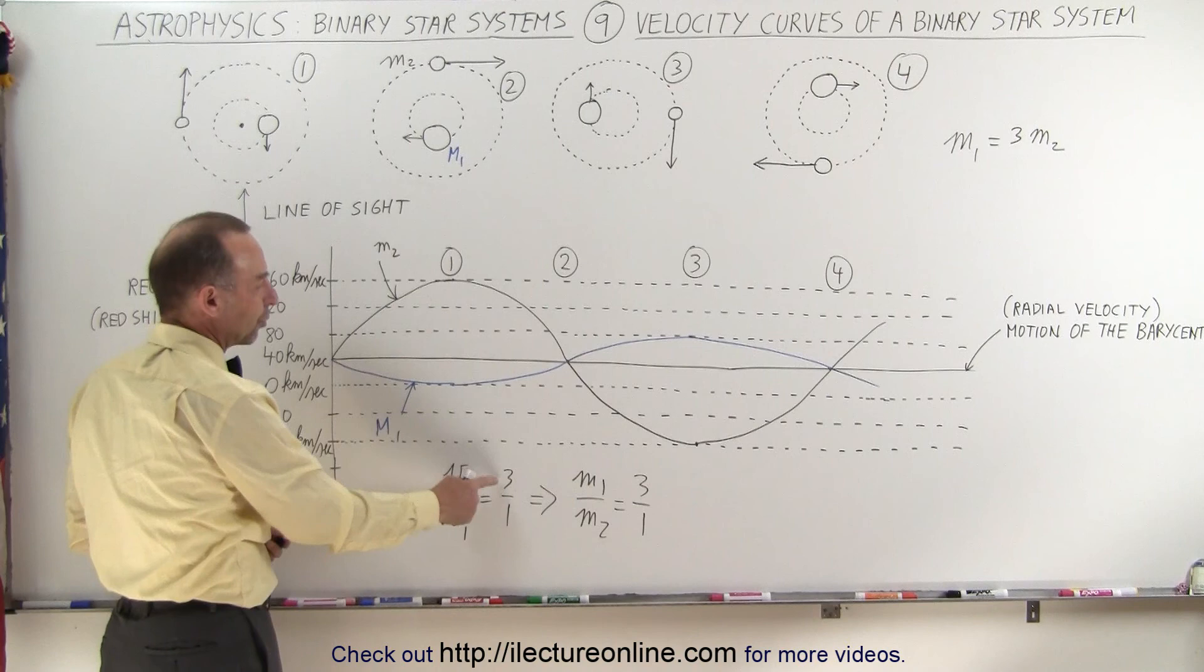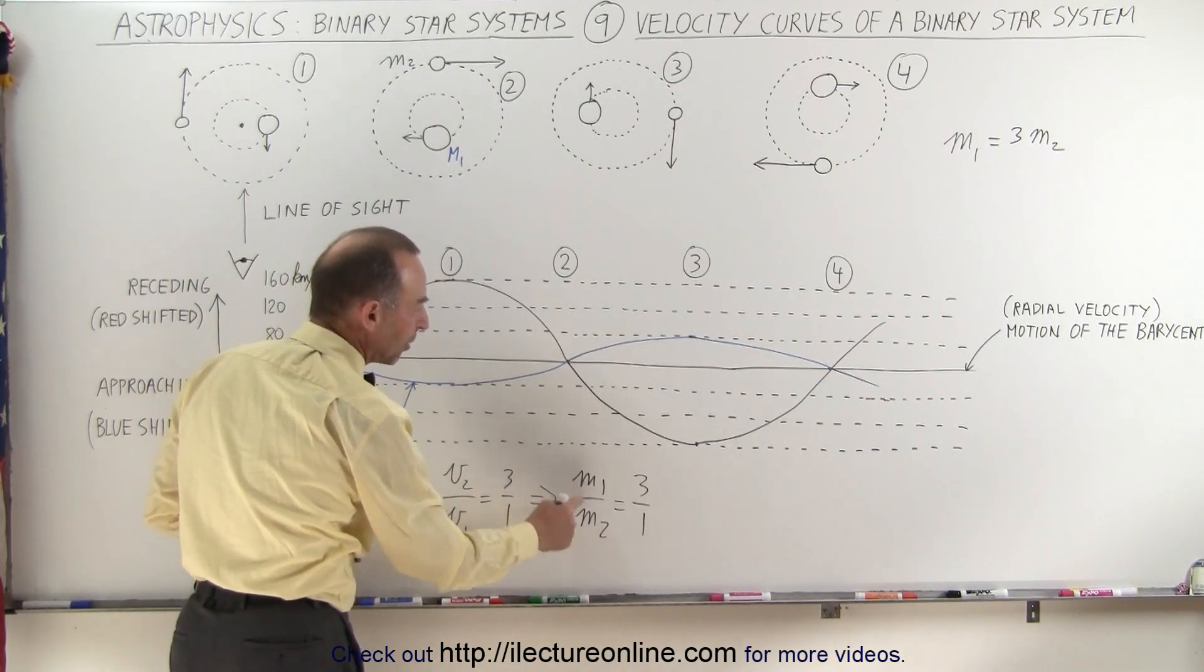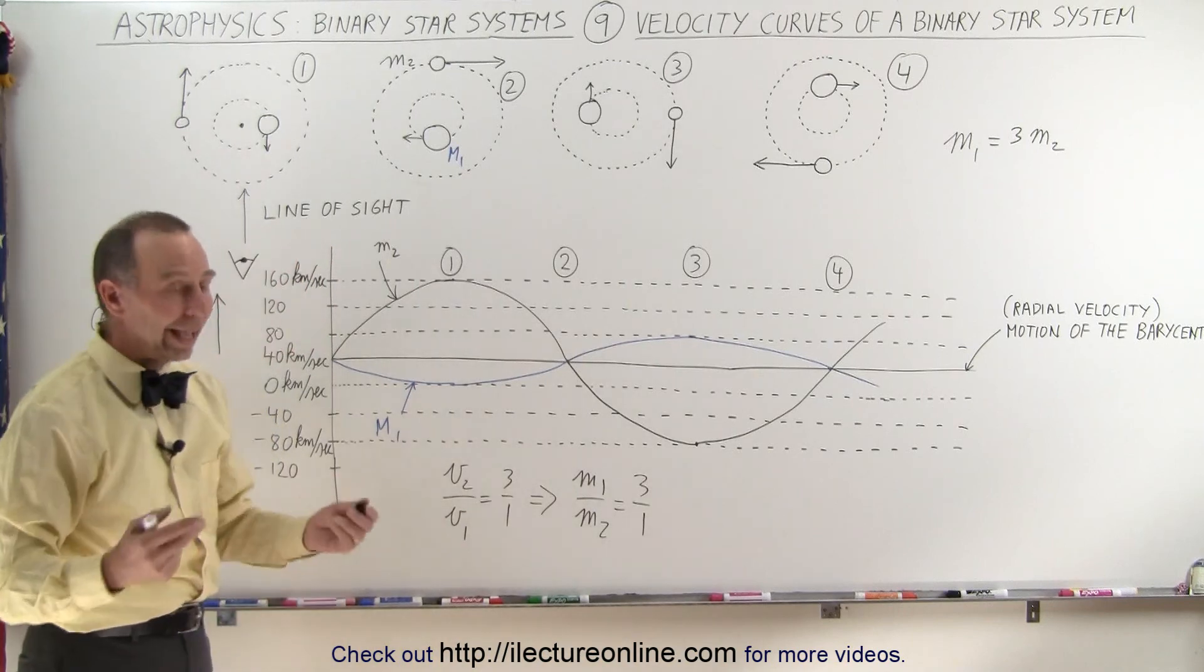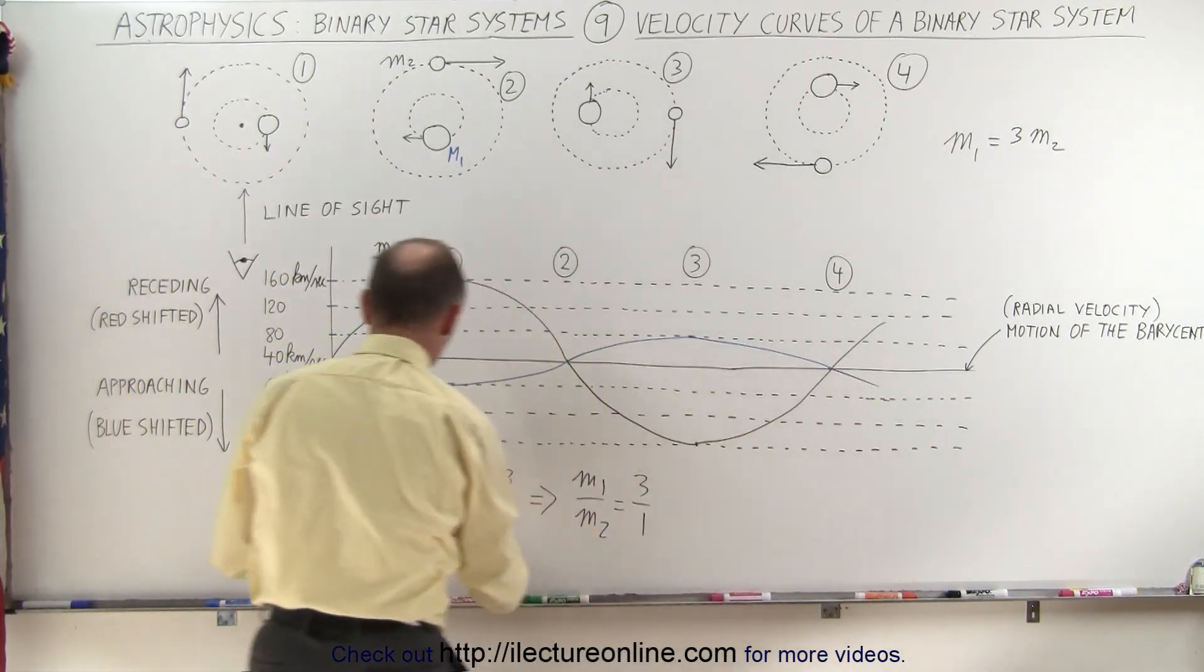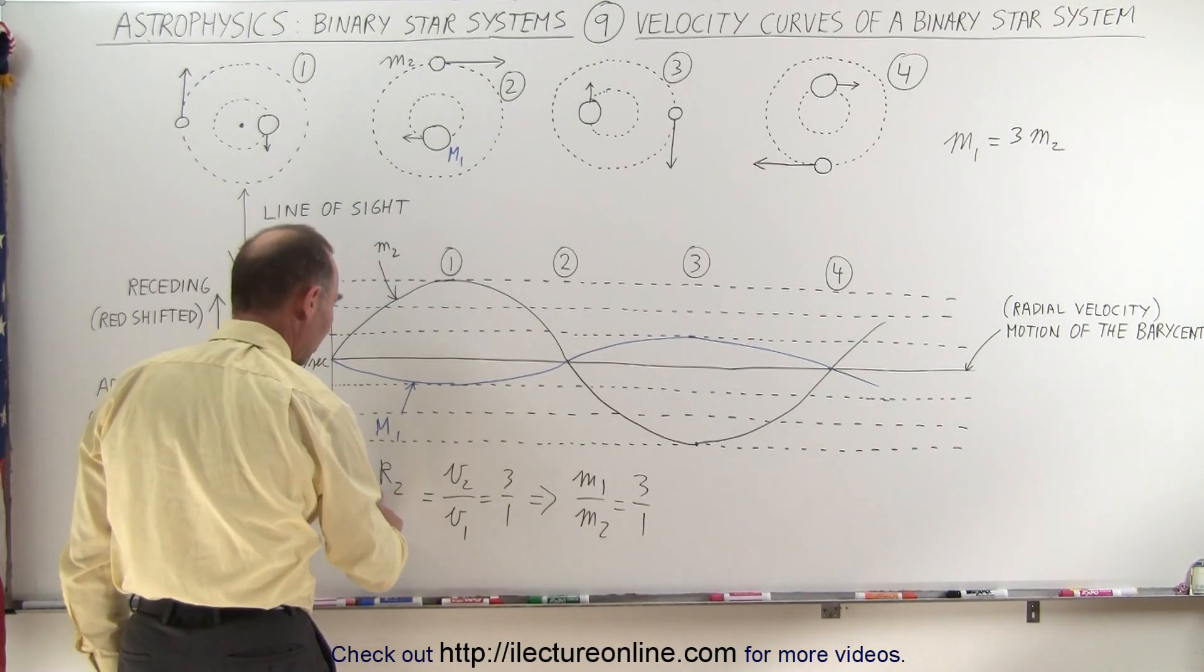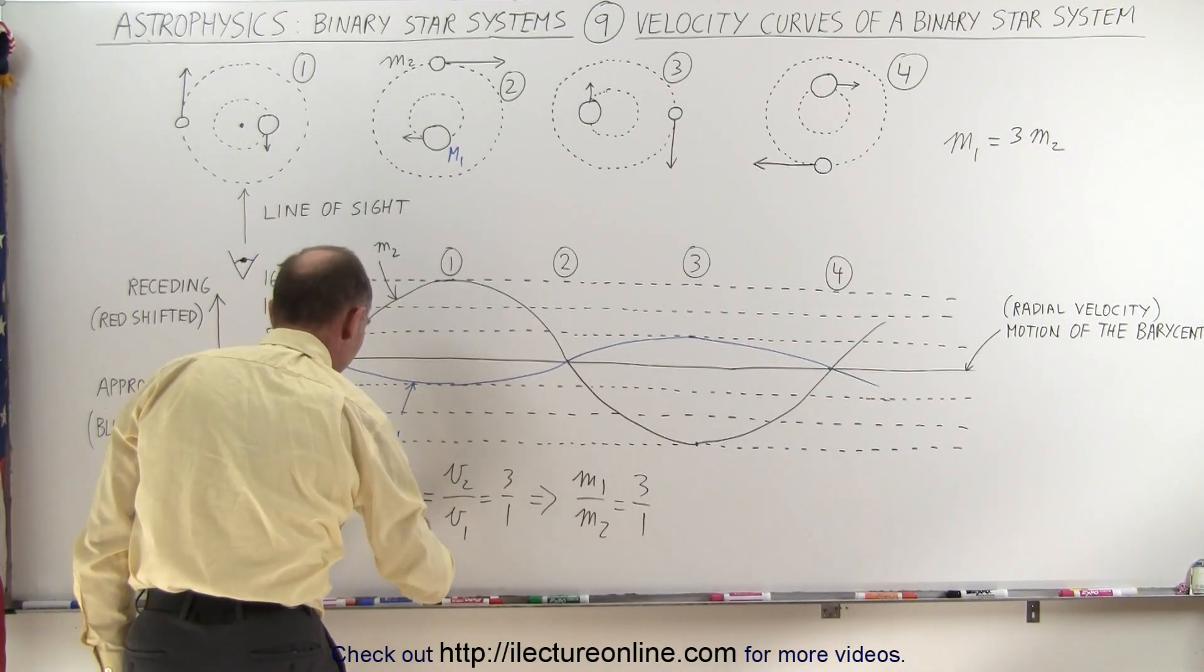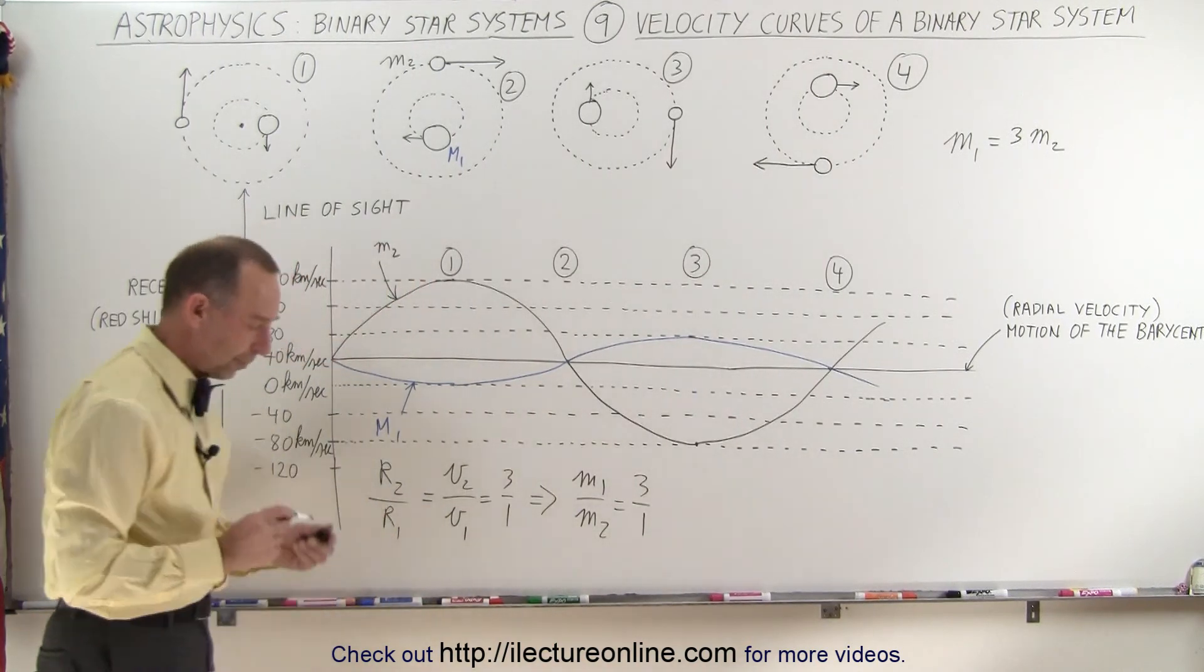If the smaller object moves three times as fast, that means that the mass of the large object must be three times as much, and we also then realize that the radius, of course, here we can say that the radius of the smaller object relative to the barycenter to the radius of the larger object relative to the barycenter also must be 3 to 1.